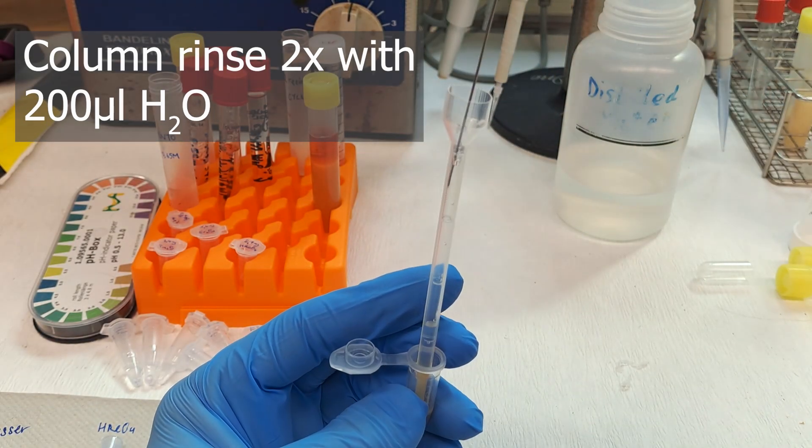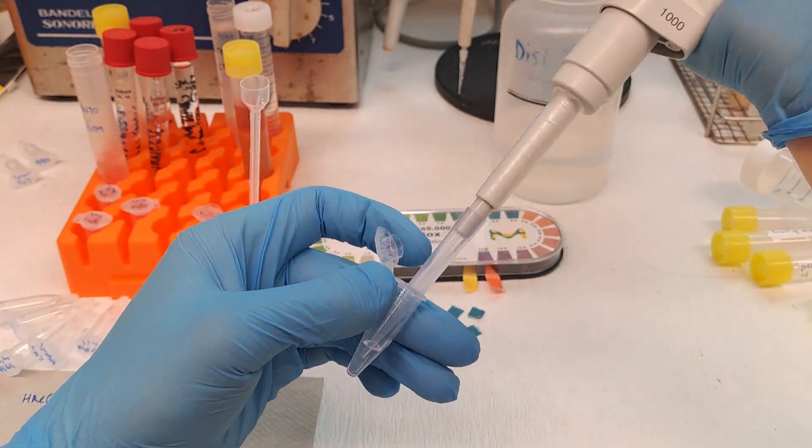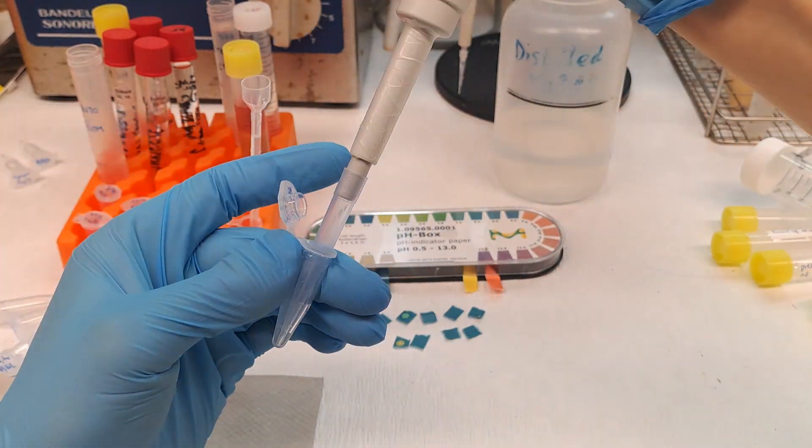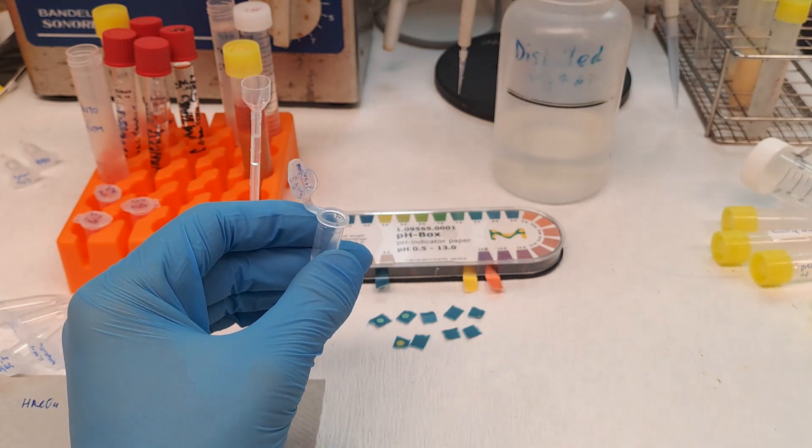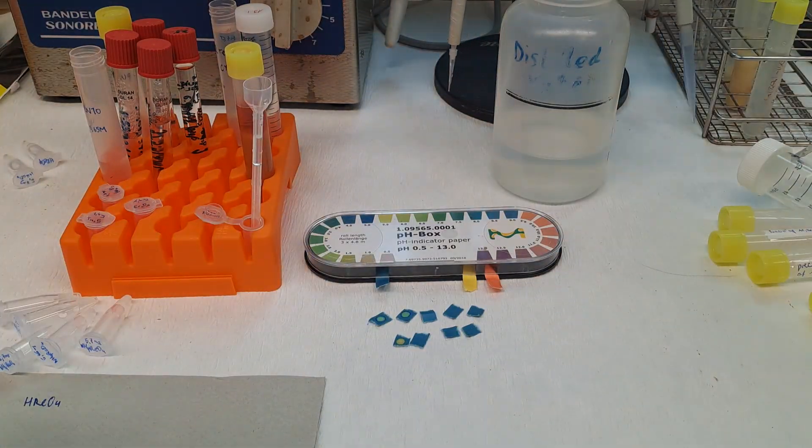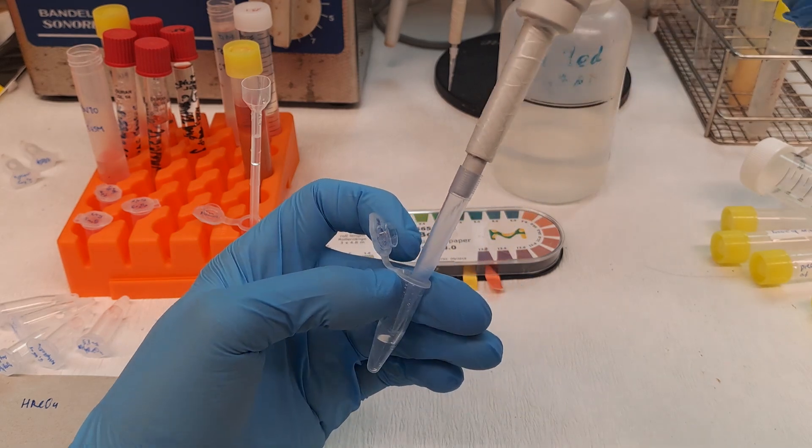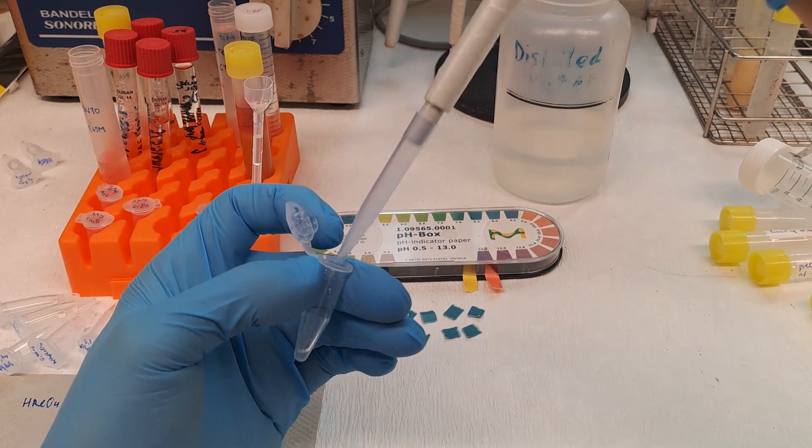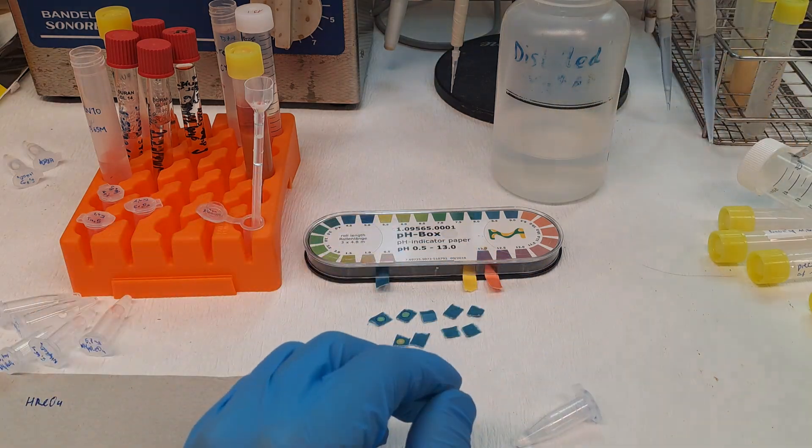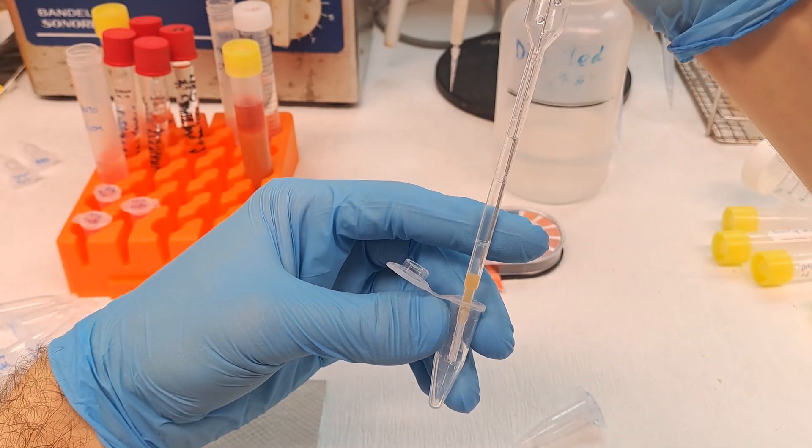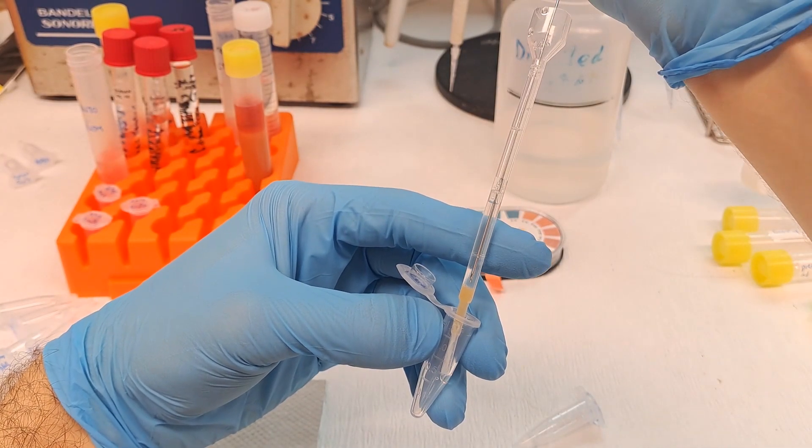Once that's done, the actual reaction can start. 200 microliters of the ammonium perrhenate solution is now added to the column. The Eppendorf tube is rinsed with another 200 microliters and also added to the column. In total, the perrhenic acid should be present in around 500 microliters of water. Now pull out the air again and then add the last 100 microliters of water and pull out the air yet again.